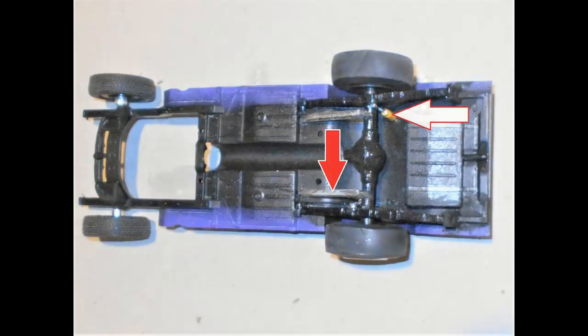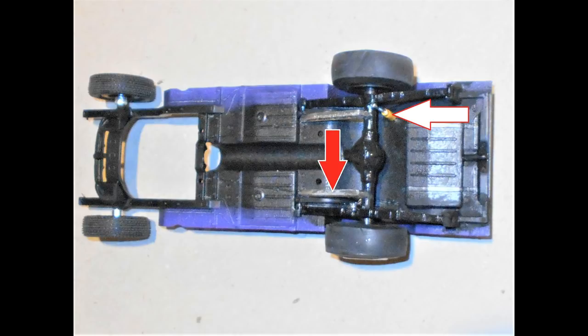Here you can see the red arrow pointing to the traction bars and the white arrow pointing to the visible yellow shock absorber in the back and the whole thing is mocked up. I also did a little detailing with a silver pen on some of the lines and the straps that hold the gas tank in.